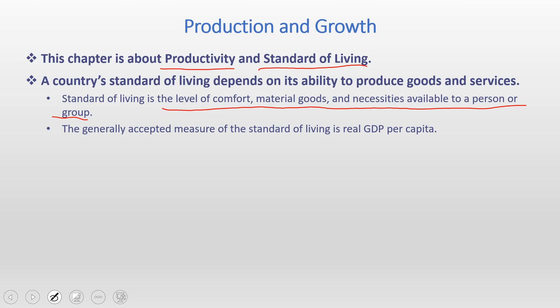At the macro level, how do we measure standard of living for a certain country or group of people? To measure standard of living, the most common measure is real GDP per capita. Real GDP is the market value of all final goods and services produced within the boundaries of a country, adjusted for inflation. When we divide real GDP by total population, we get real GDP per capita. If a country's real GDP per capita is high, its standard of living is higher; if it is low, standard of living is low.